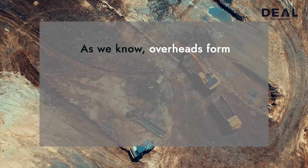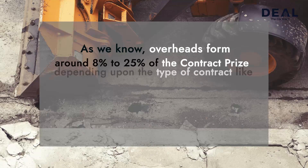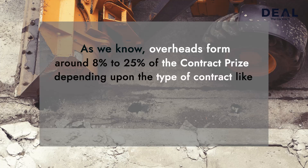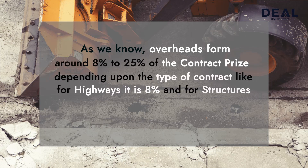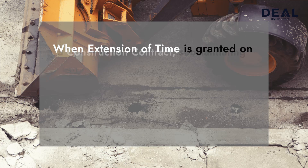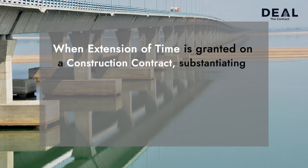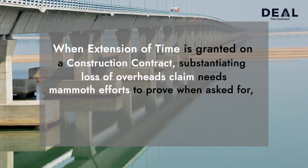As we know, overheads form around 8% to 25% of the contract price depending upon the type of contract — like for highways it is 8% and for structures it is to the extent of 25%. When extension of time is granted on a construction contract, substantiating loss of overheads claim needs mammoth efforts to prove when asked for by the authority.